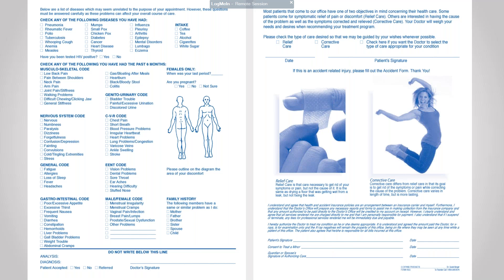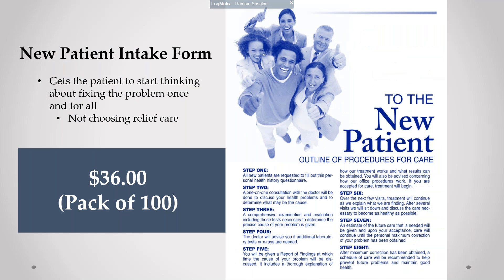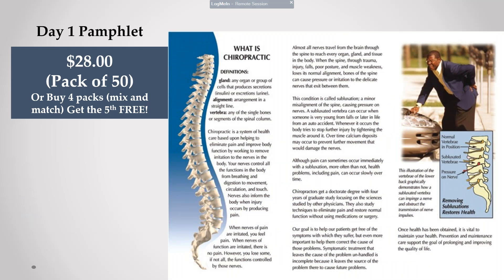They fill out the paperwork, and the back page mentions a little bit about relief care and corrective care — that sets them up because you're going to be speaking to them about that on a future visit. Linda, these are a pack of 100 — and for each four-page packet, you get 100 for $36. That is correct. It gets the patient to start thinking about fixing the problem once and for all, not just choosing relief care. So you're leading them down the path. Here's your day one pamphlet — it explains what chiropractic is: glands, alignment, vertebrae, subluxation.